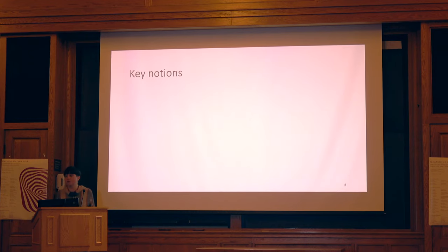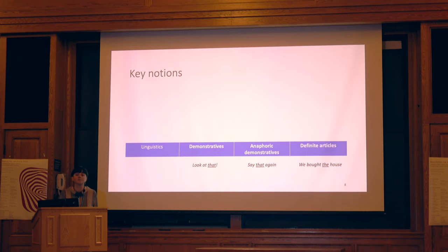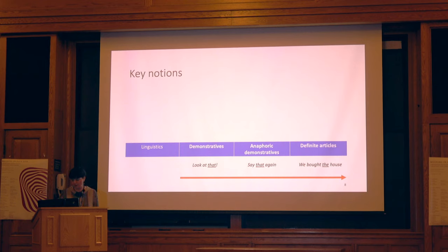The key notions. The diachronic development at the linguistic level goes from demonstratives to anaphoric uses to definite articles. Examples: 'Look at that,' pointing to an entity in physical space; 'Say that again,' pointing at what we've just said in the conversation; and 'We want the house,' referring to that house I told you about six months ago. The diachronic development of these forms goes in that direction.